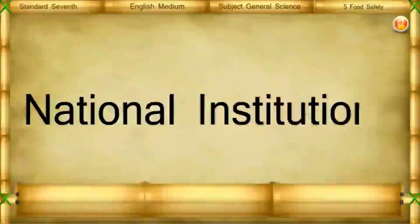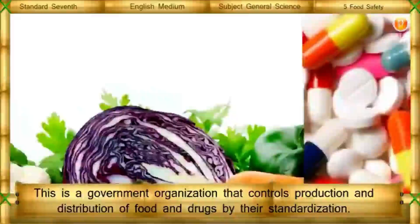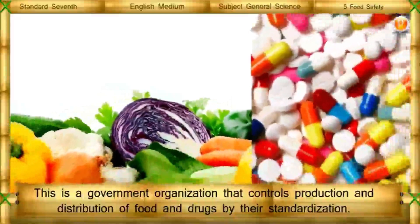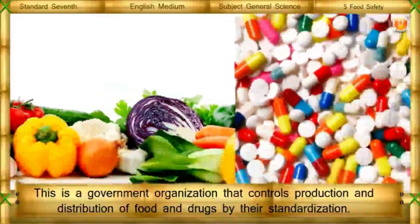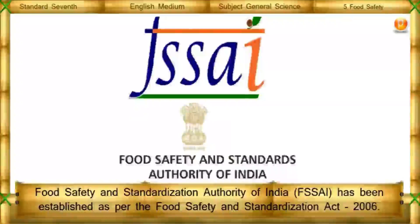National Institutions: The Food and Drug Administration is a government organization that controls production and distribution of food and drugs by their standardization. The Food Safety and Standardization Authority of India oversees the Food Safety and Standardization Act.